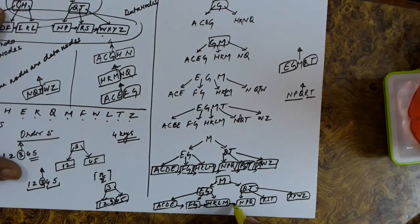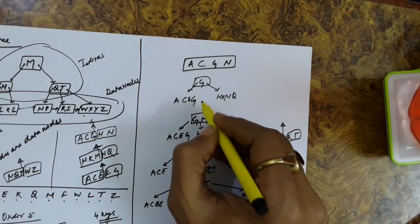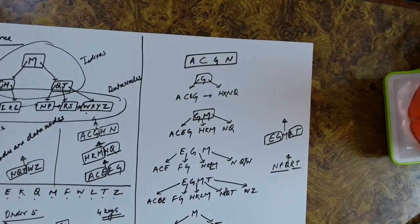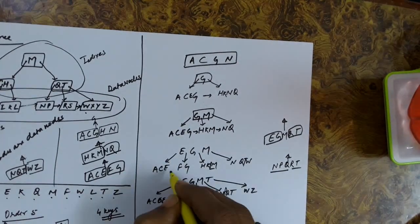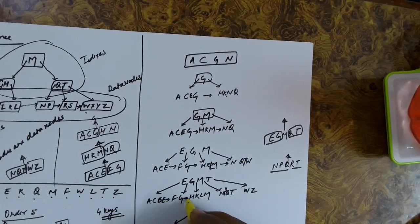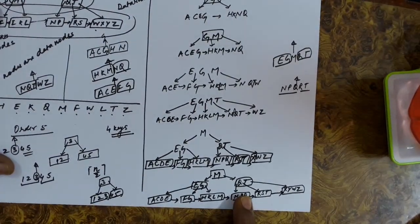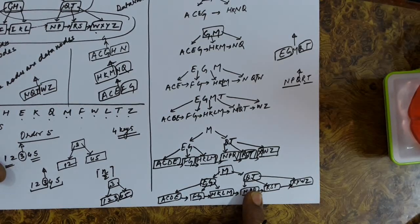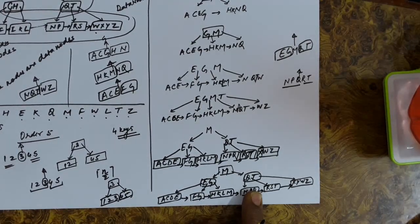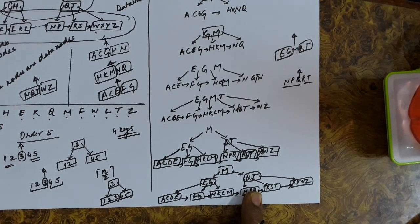Now we need to link up all the leaf nodes. All the leaf nodes will be linked to each other in a chain. This is the final B+ tree. To summarize: whenever we split a leaf node, we retain the median key on the leaf node while sending a copy upwards. But if we are splitting an internal node, there is no need to retain the median key on the bottom nodes — the median key is sent upwards without retaining it. Thank you.